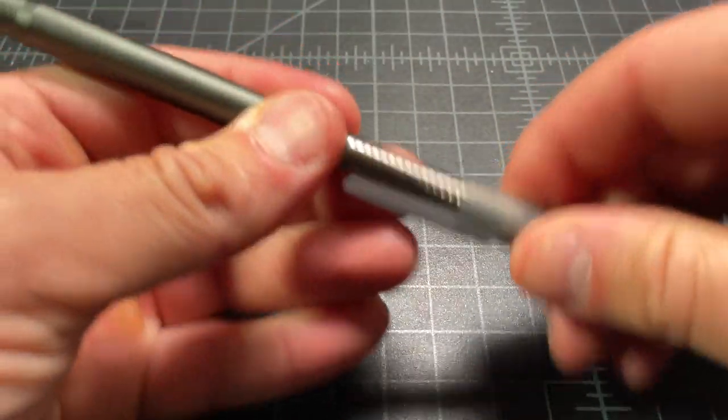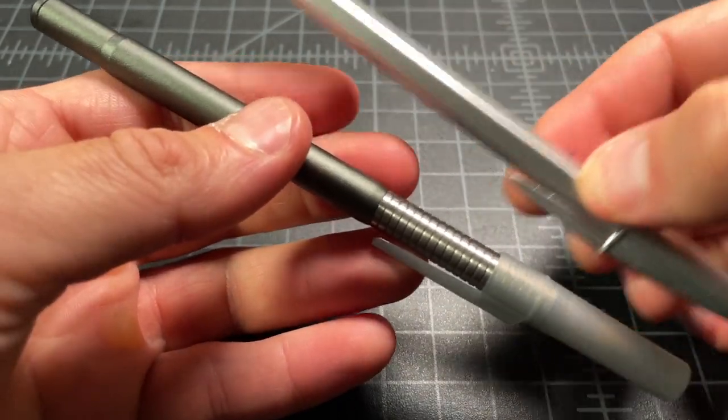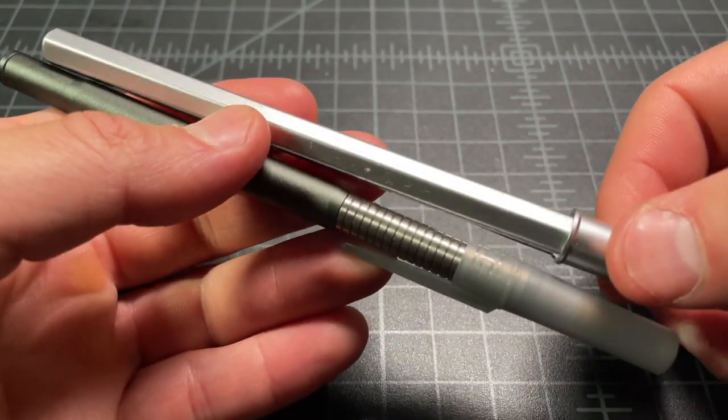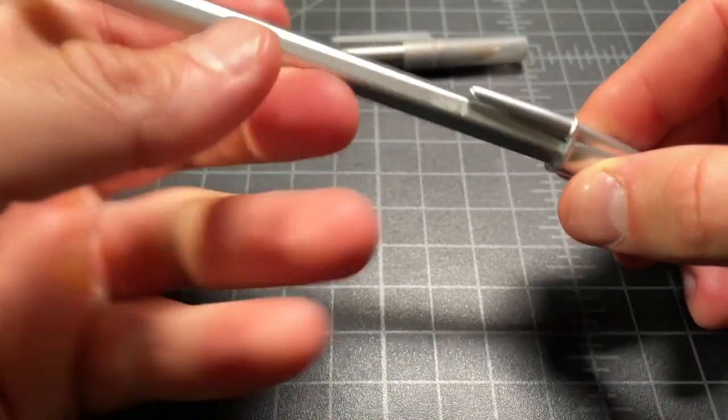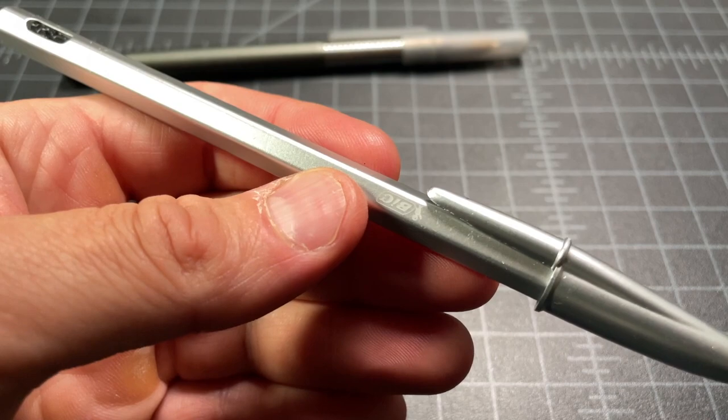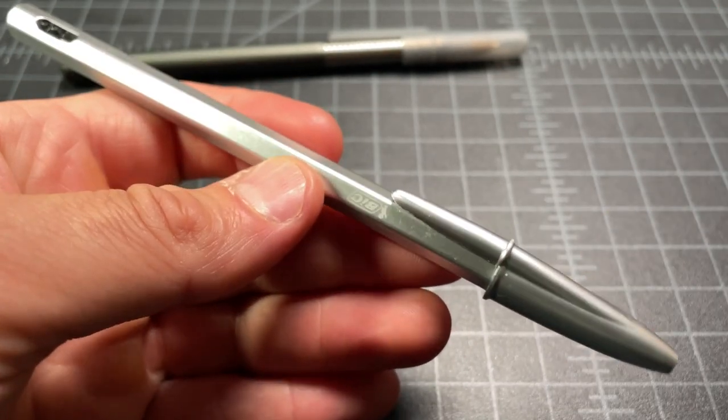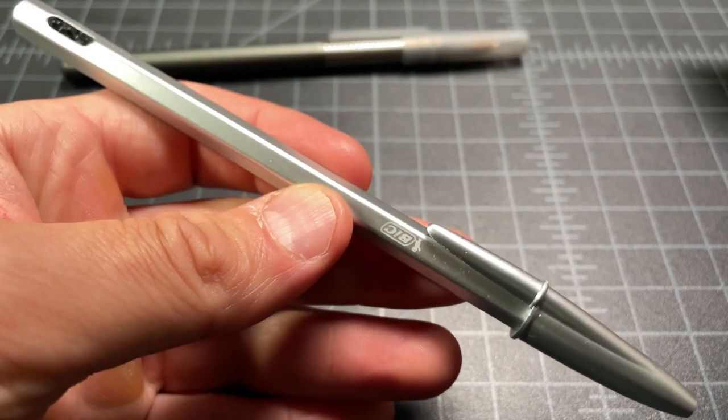Before we wrap up I did want to do a quick comparison between the Baux pen and this. This is the Bic Crystal Renew. I think Bic has been making the Crystal since, I forgot, it's late 50s or early 60s. They've been making the Crystal for a long time.